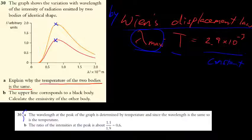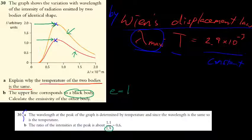Part b of question 30: the upper curve is a perfect blackbody with e = 1. Find the emissivity of the lower curve. Since both are at the same temperature, the peak wavelength is unchanged. You compare the peak intensities: the perfect blackbody emits 1.9 units at peak, the other emits 1.1 units. The emissivity is therefore 1.1/1.9 ≈ 0.6.